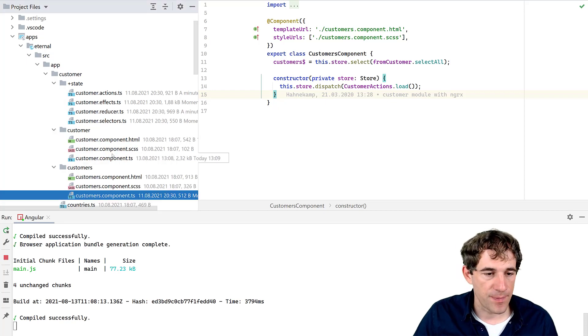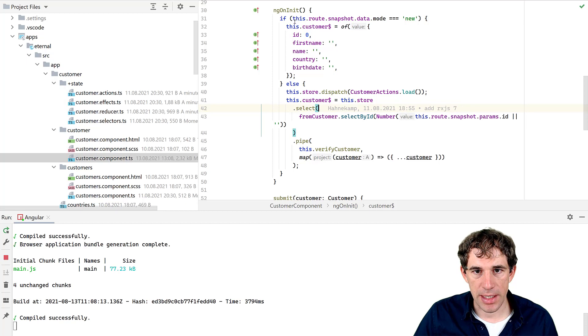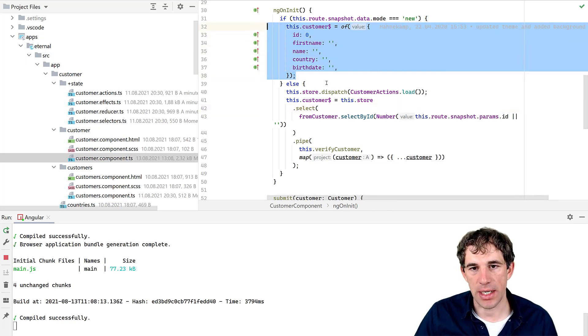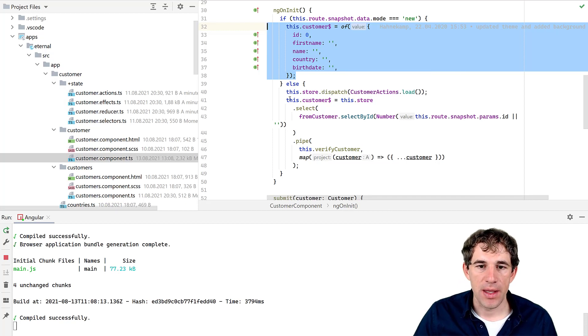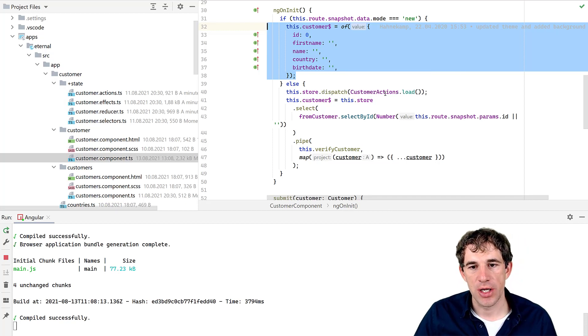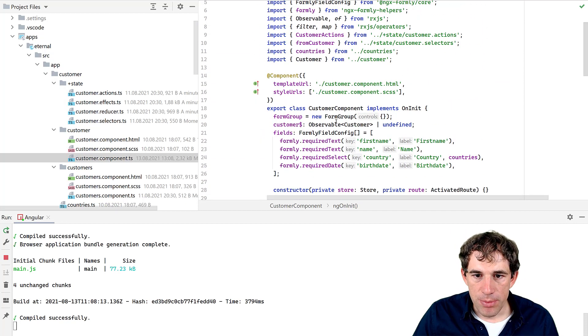And in the detail component, where we're showing the detail form, we see here that in ngOnInit, we are checking if this is a use case where we add a new customer. In that case, we create a new observable of an empty customer. Otherwise, we just fetch the existing one from our state and use that one.